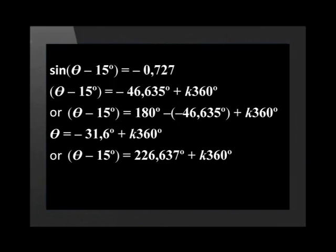First, we add the numbers on the right and get 226.637 degrees, and now we add 15 degrees to both sides. This gives us theta equals 241.6 degrees plus k times 360 degrees, and k is an element of any integer.